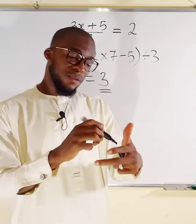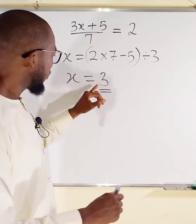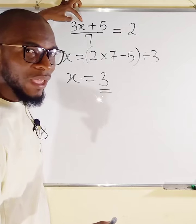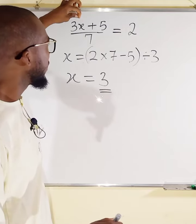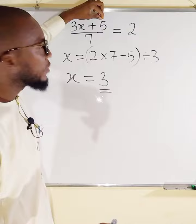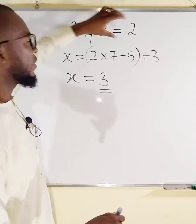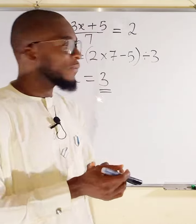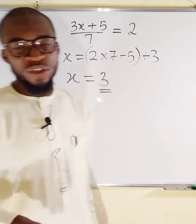But you have to check whether this is true or not. Let's substitute the value of x in this equation. 3 multiplied by 3 when x equals 3, we have 9. 9 plus 5 is 14, then 14 divided by 7 equals 2. And this is the simplest way to solve algebraic fraction in an equation.